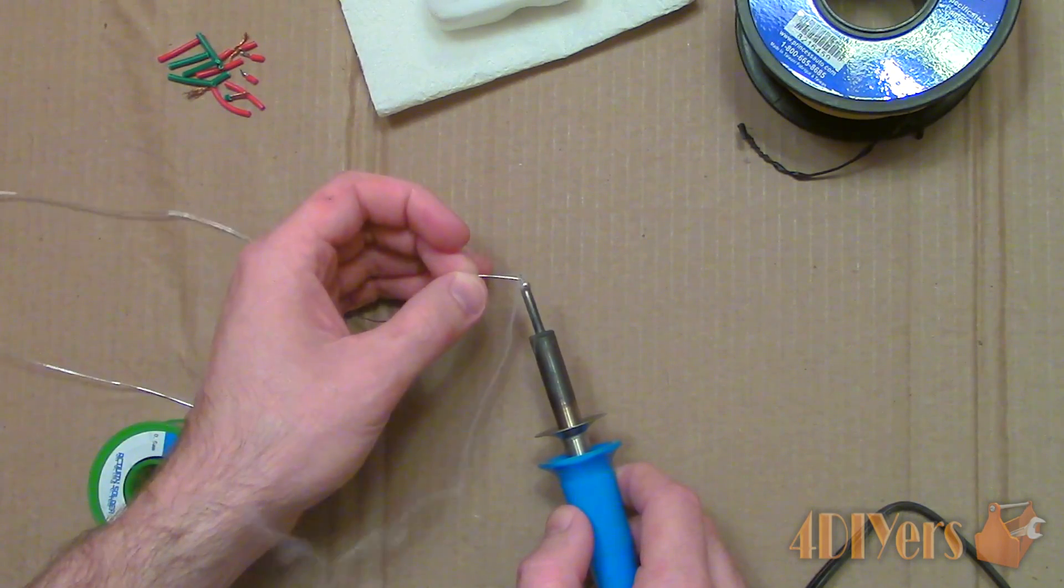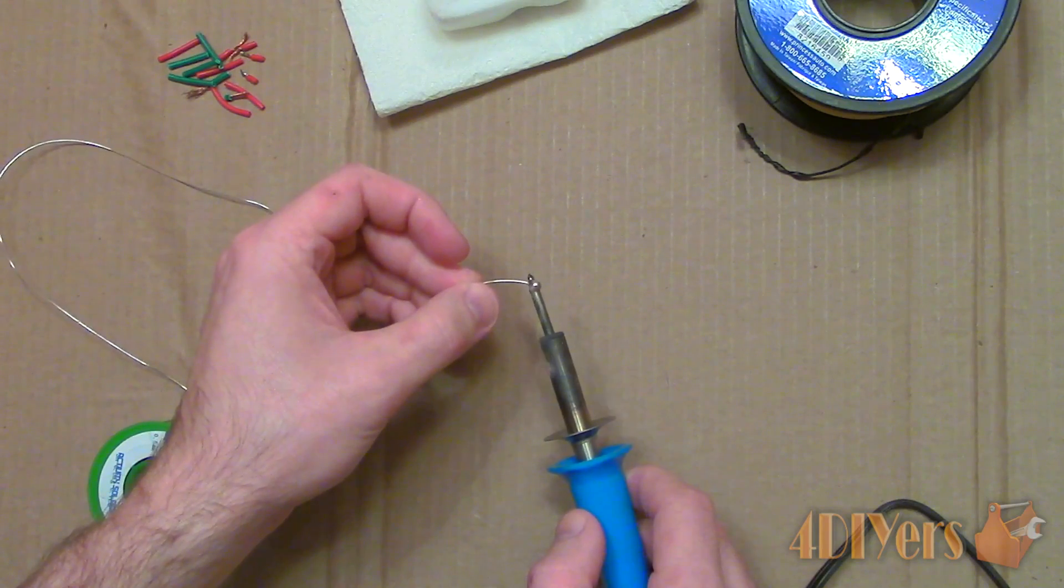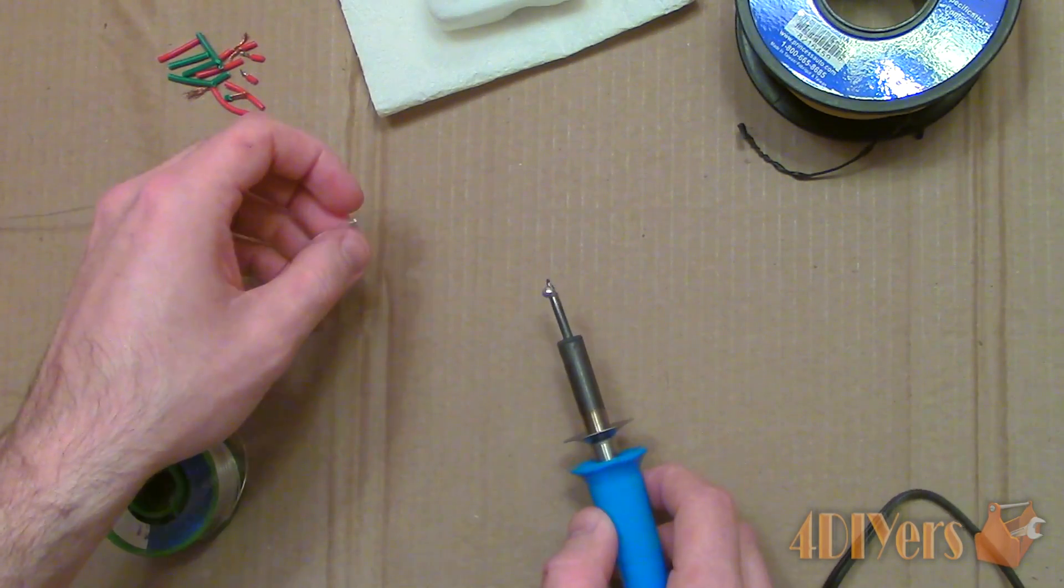The rosin core in the solder will also clean the connection if it's not overly dirty. When the connection is heated, the rosin will eventually burn off.